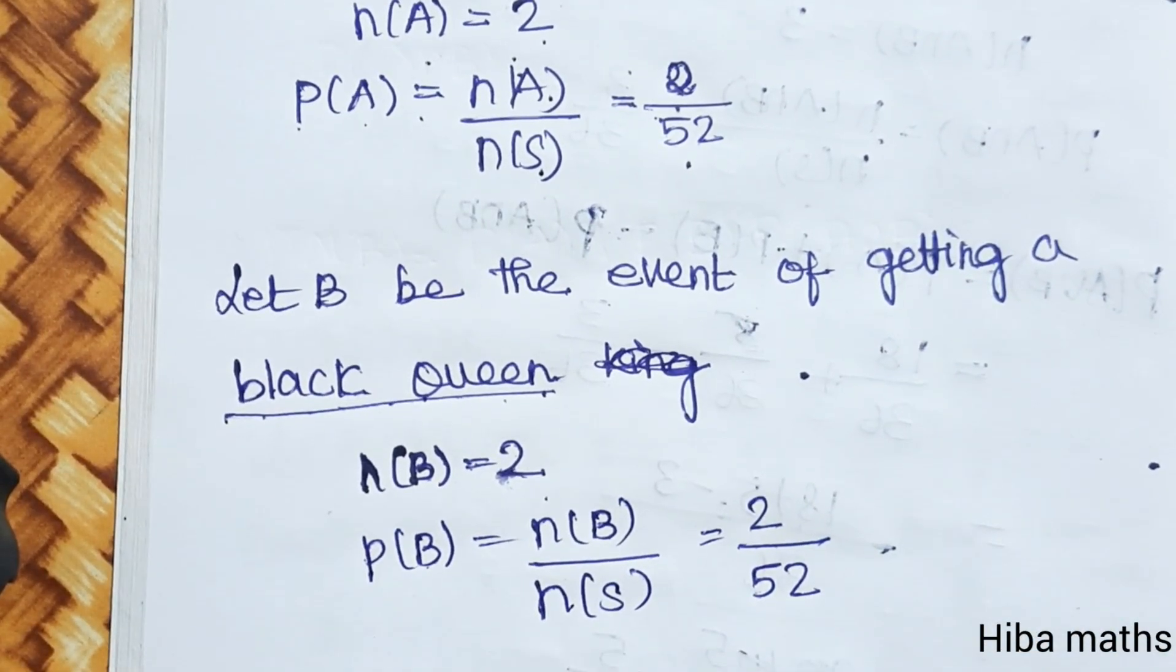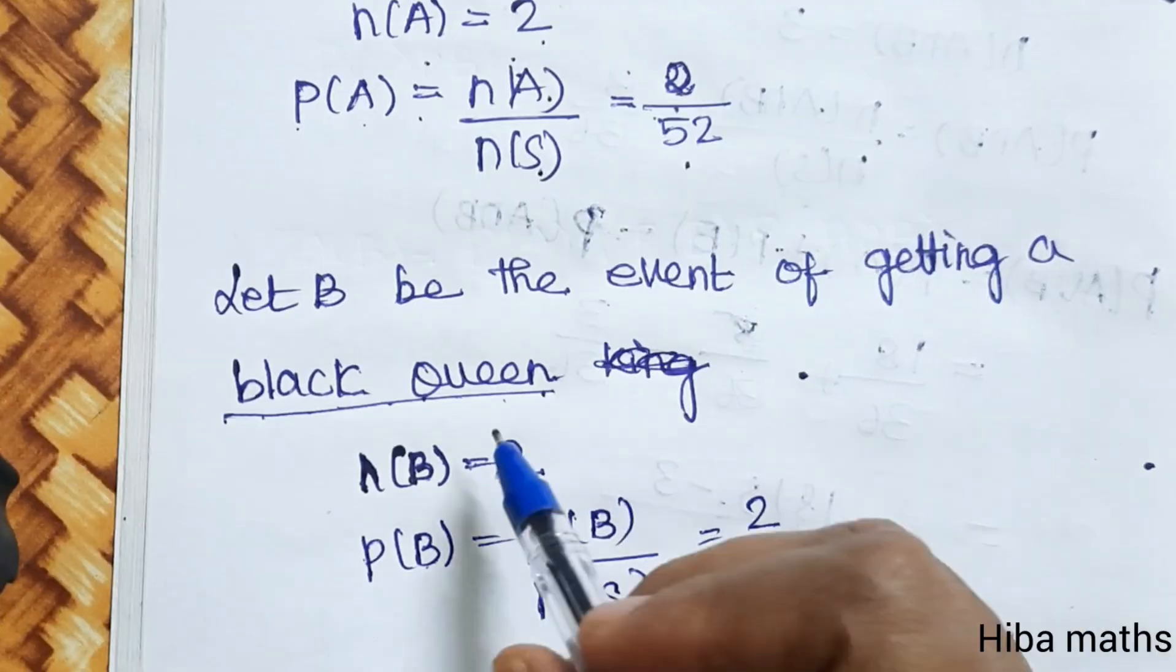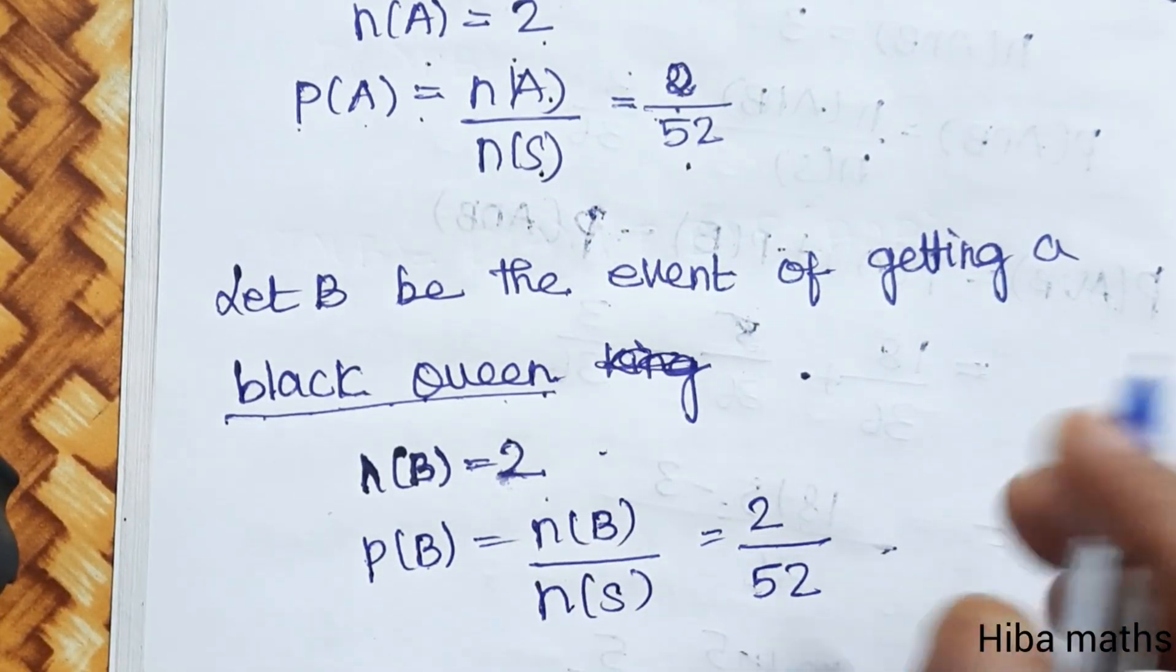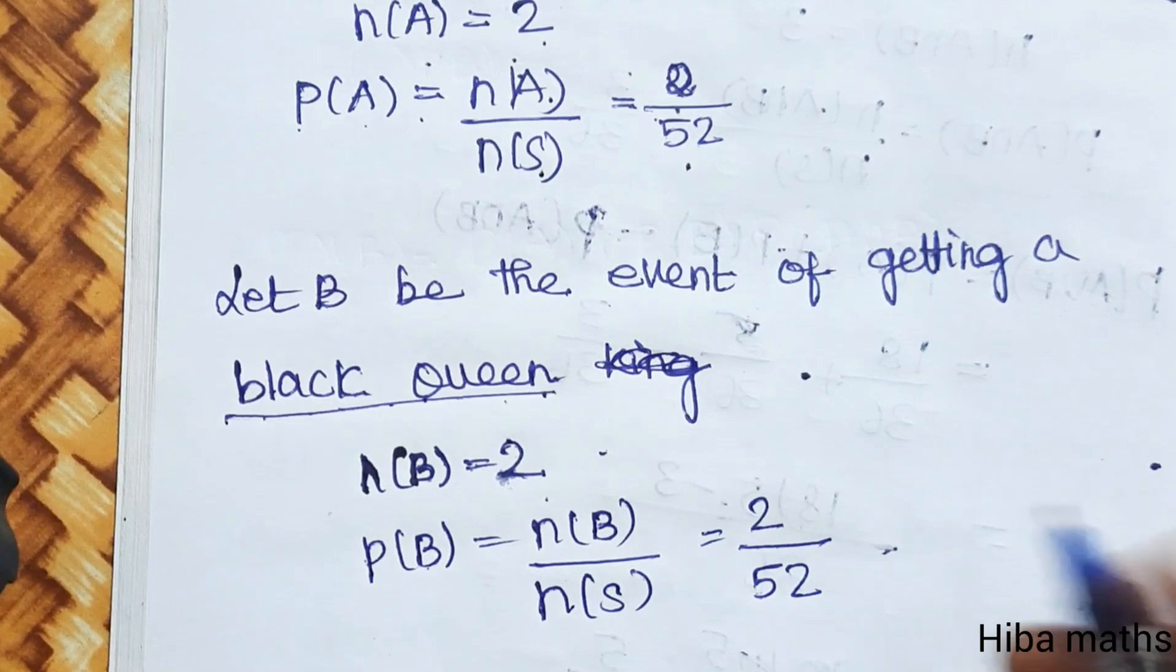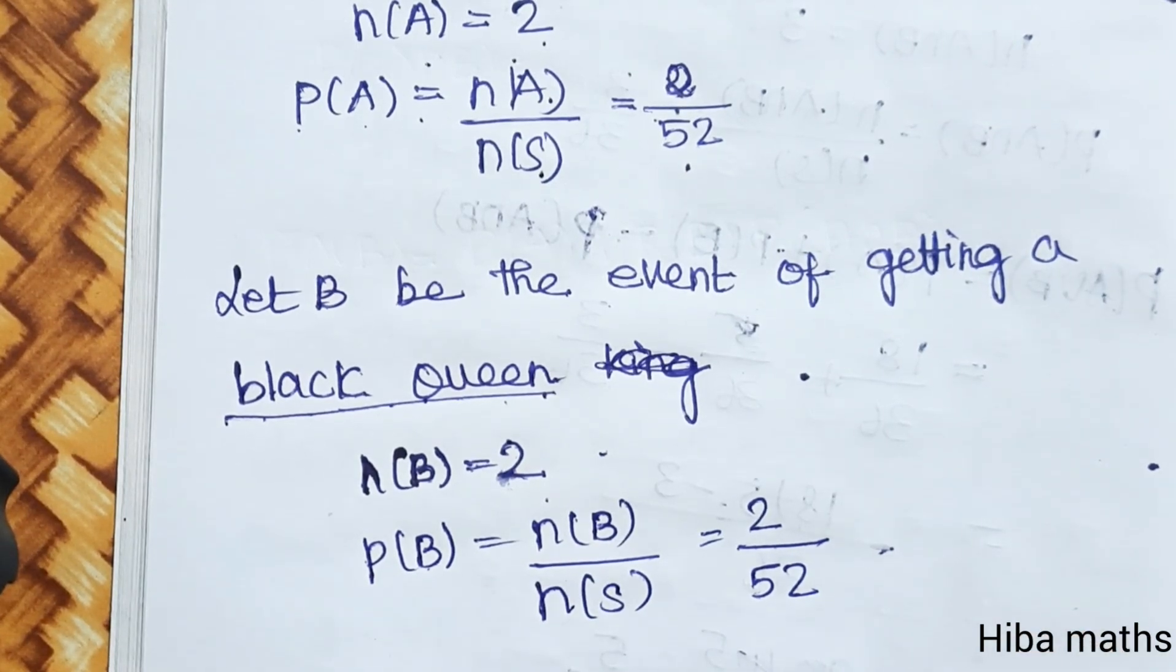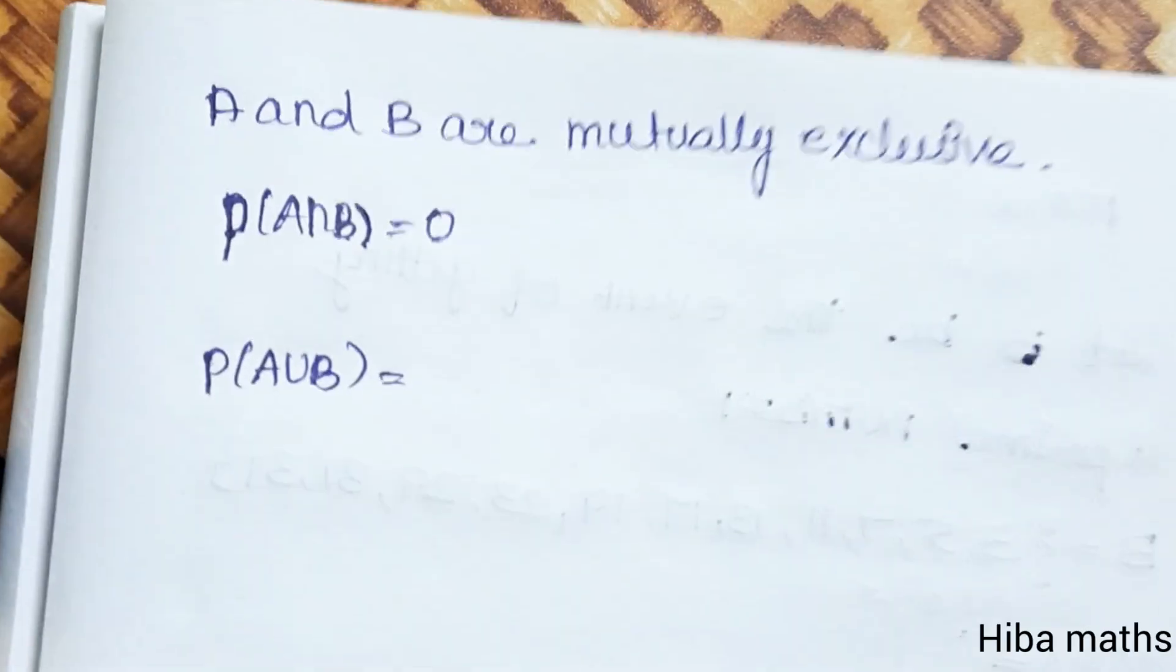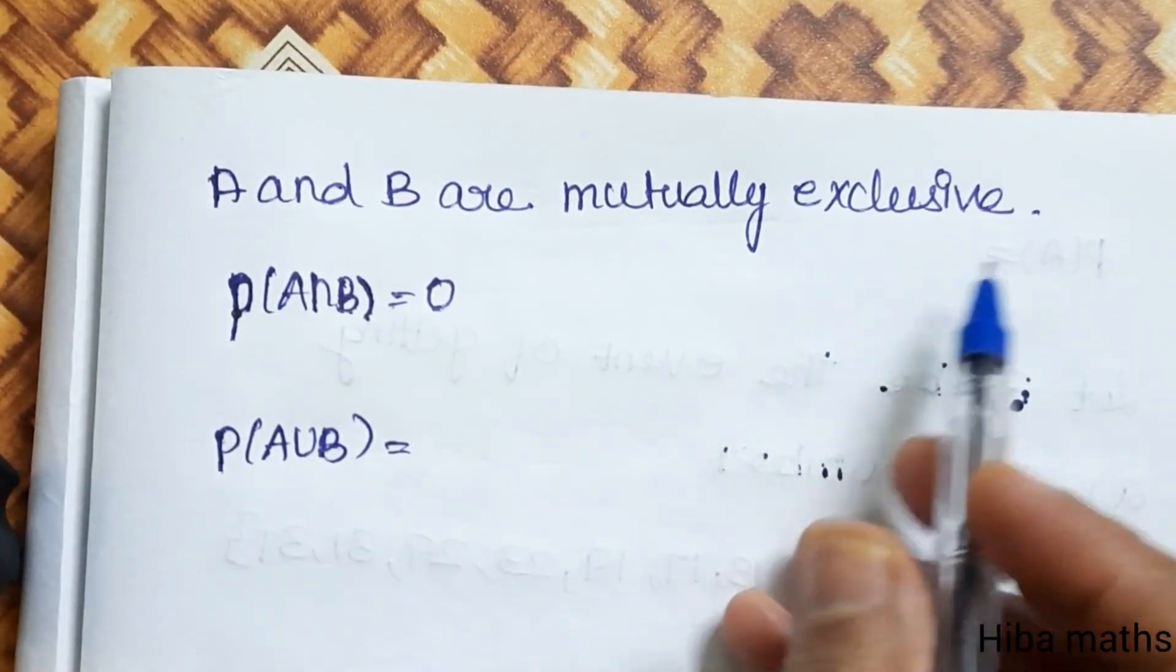And this is mutually exclusive. Queen is a king, or red color is black color. So mutually exclusive. N(A) intersection B is 0. That is how? A and B are mutually exclusive.